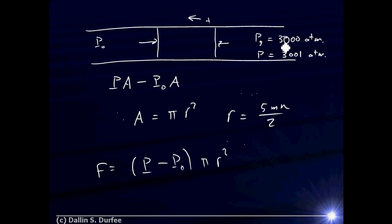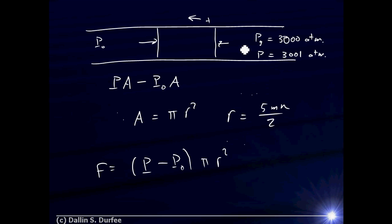Gauge pressure shows up a lot because if I use gauge pressure I can ignore the atmosphere on the other side. If I have a pressure on this side and a pressure on that side, I really care about the difference. Since one side is at atmospheric pressure, I can just use the gauge pressure directly. If that confuses you, don't worry — just always use absolute pressure and things will work correctly.